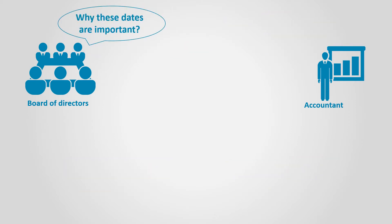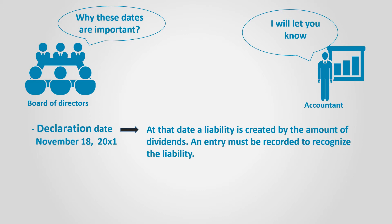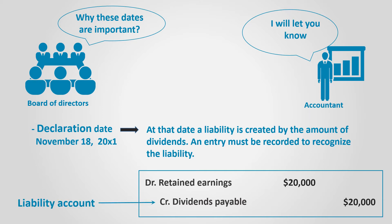What is important about these dates? The declaration date is important because on that date a liability is created. As soon as the board declares dividends, the business is liable to pay them. An entry is required to recognize such liability as follows: debit retained earnings, or dividends, and credit dividends payable for $20,000. It is to be noted that dividends payable is a current liability account.